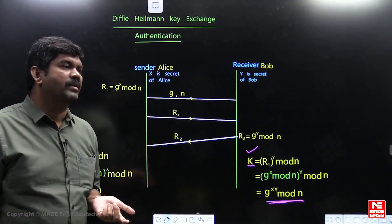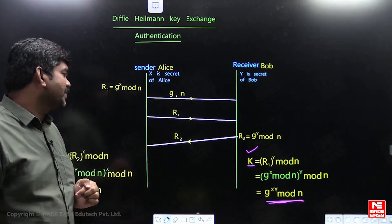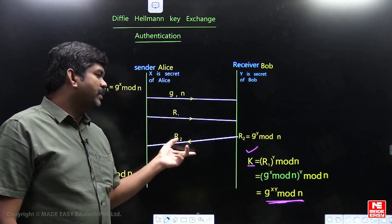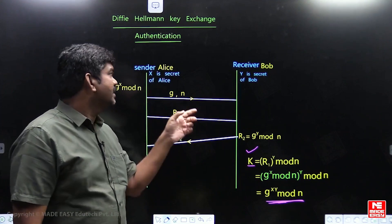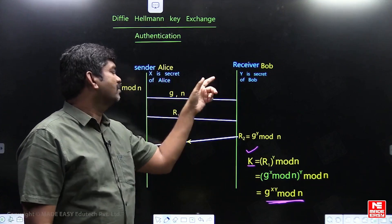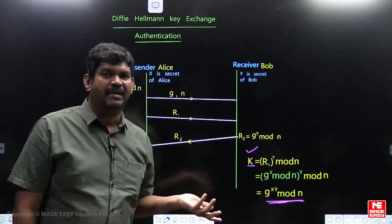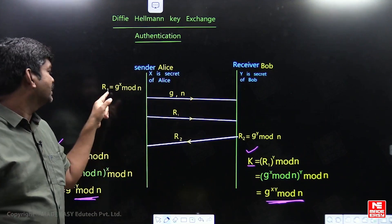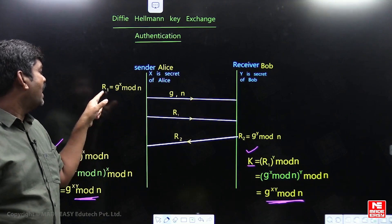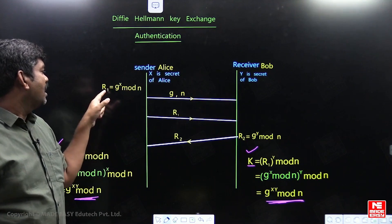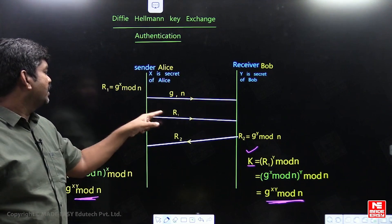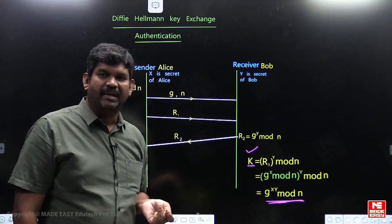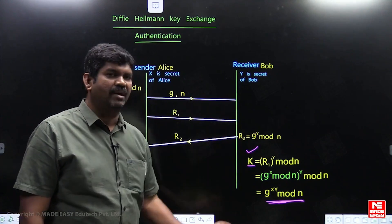An important question: from R1 or R2 transmitted on the channel, can the secrets X and Y be calculated? It is not possible. R1 is G power X mod N — even by substituting all known values, X cannot be calculated. The same applies to Y. The mod operation makes it computationally infeasible to reverse-engineer the secret values.